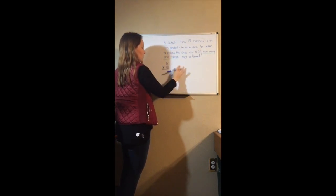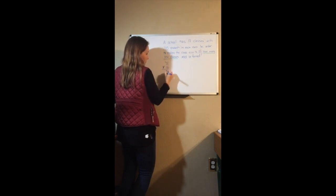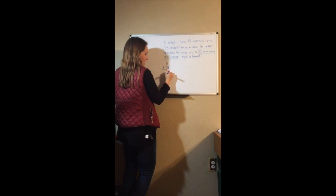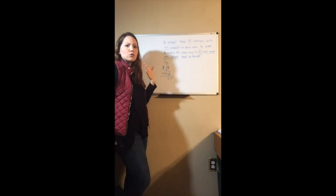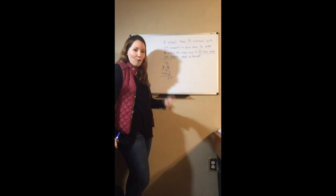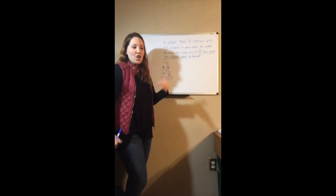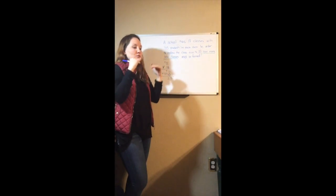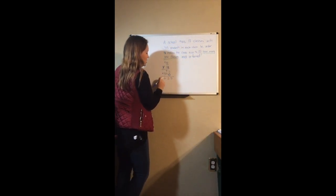So I have 35 times 18. I'm going to erase this to make it easier to understand. 8 times 5 is 40, carry the 4; 8 times 3 is 24 plus 4 is 28. Done with that row. Drop down a line and add a 0. 1 times 5 is 5, 1 times 3 is 3. The more you follow the same steps over and over, by the time you sit down for the exam it's going to come really fast.